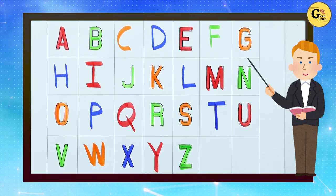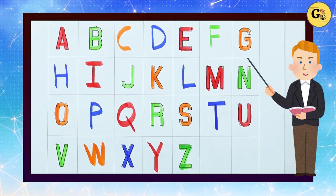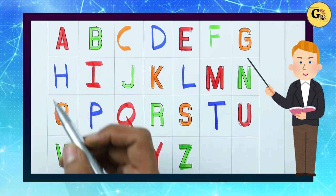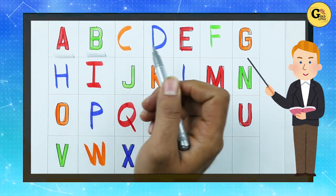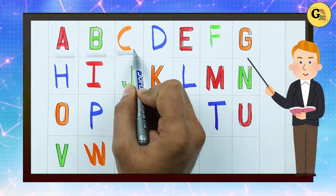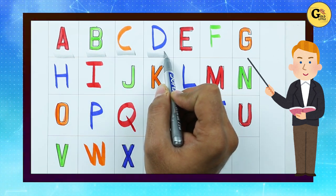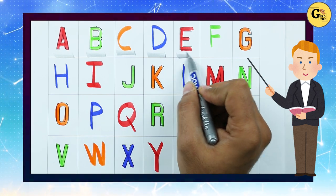Hello friends, today we learn alphabet, capital alphabets. A, A for apple. B, B for ball. C, C for cat. D, D for dog.